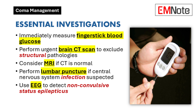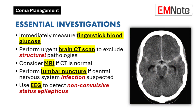Before proceeding with further investigations, it is mandatory to measure fingerstick blood glucose to rule out hypoglycemia. For urgent neuroimaging, CT of the brain is the primary imaging modality to exclude structural pathologies such as intracranial bleeding, stroke, or space-occupying lesions. If the CT scan is normal and the diagnosis remains unclear, MRI may be considered.